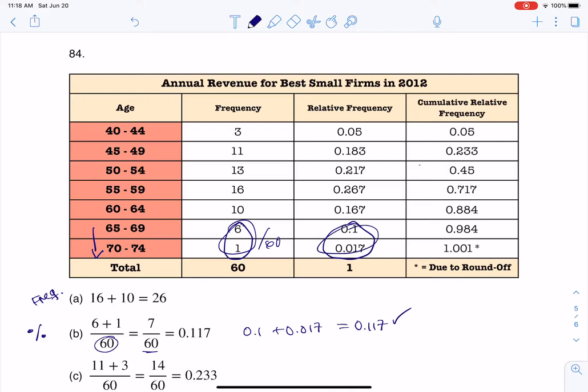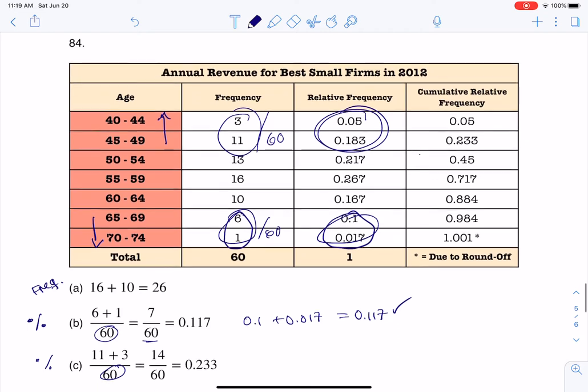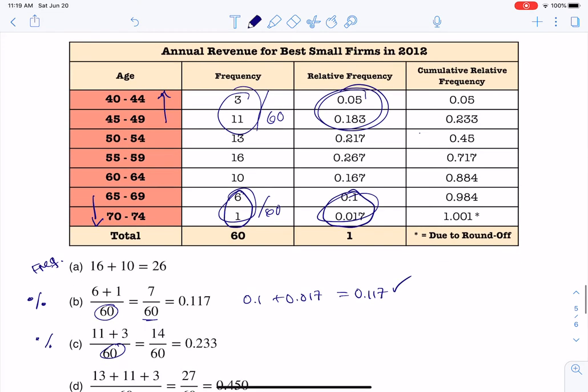Part C says, what is the relative frequency of ages under 50? If I want to go under 50, keeping in mind they wanted relative frequencies, I want from here on up. So I'm going to take these two numbers in the frequency column, add them together and divide by 60, which is what I did down here. Or I could have just taken these two relative frequencies and added them together. So there's a couple ways.